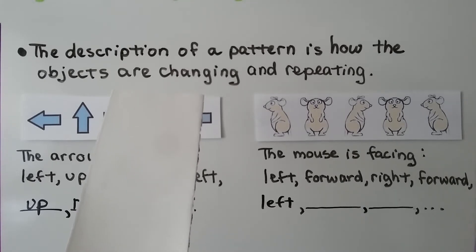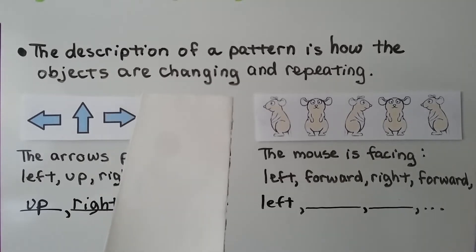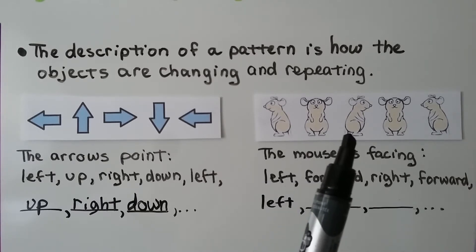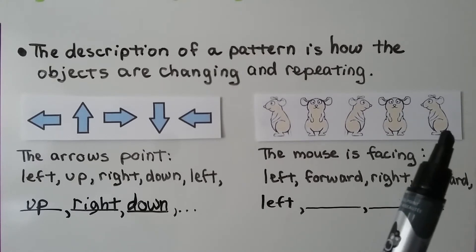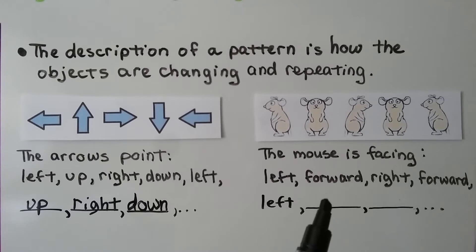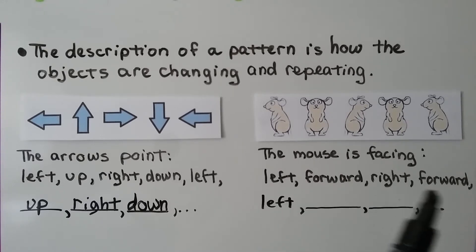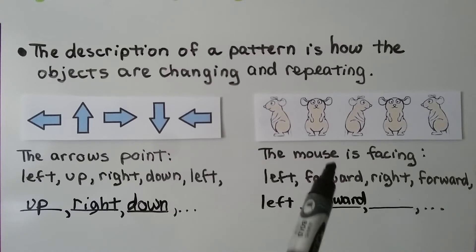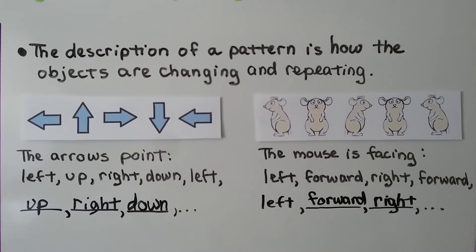Even with three objects we wouldn't be sure the pattern is correct, so we need several objects to identify a pattern. A similar example uses mice: one faces left, the next faces forward, the next right, the next forward, then left again. The pattern is left, forward, right, forward, repeating. The next mouse would face forward, and the one after that would face right.